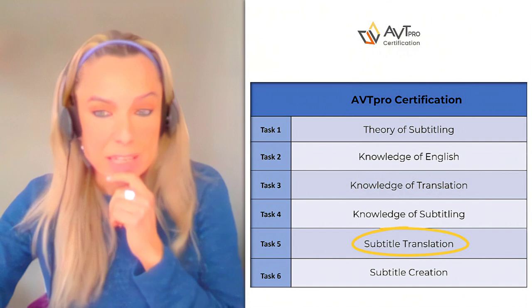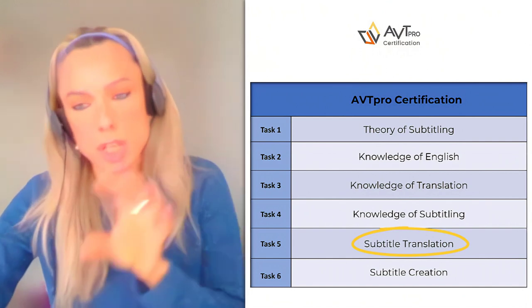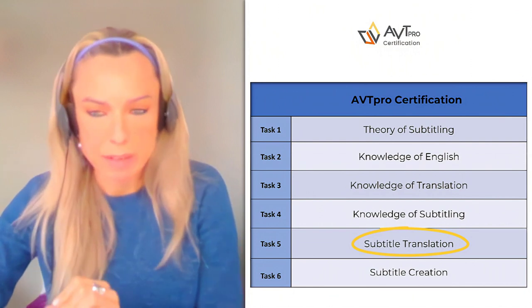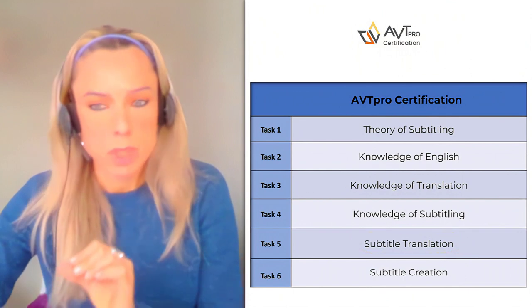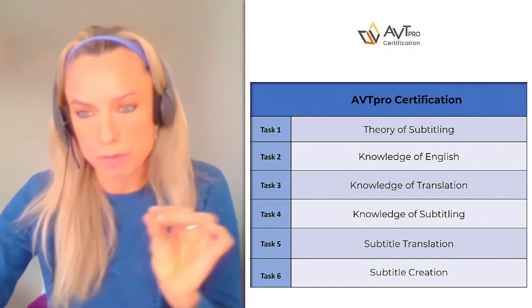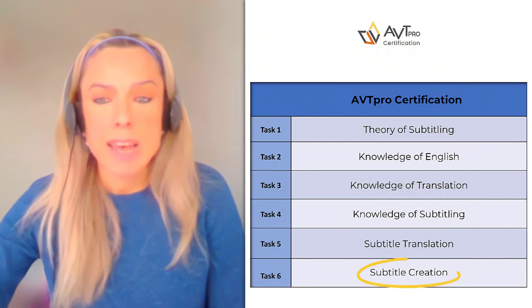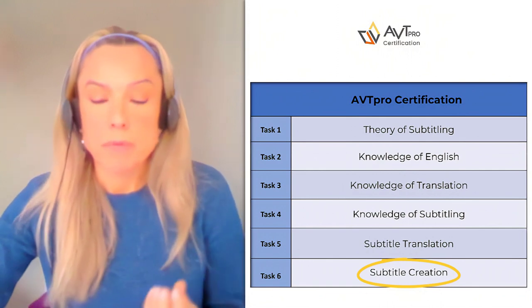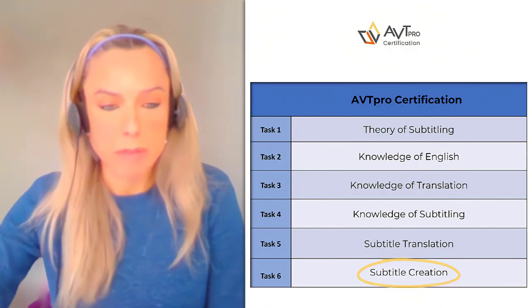Task five is subtitle translation, English into the target language, where we evaluate the linguistic competence of a subtitler. You are given a master template and you translate a clip with that aided help. The final task is subtitle creation, where we evaluate both the linguistic and technical skills of a subtitler. You're provided with a clip and you translate it from scratch into your target language. These are the main tasks in the AVT Pro program.